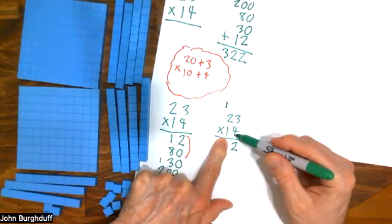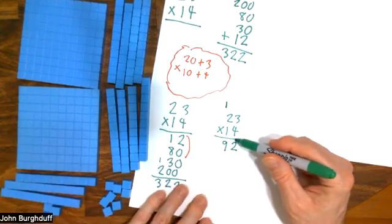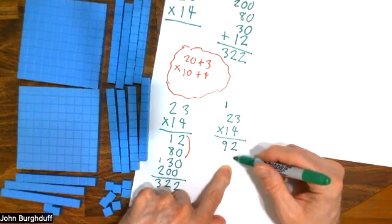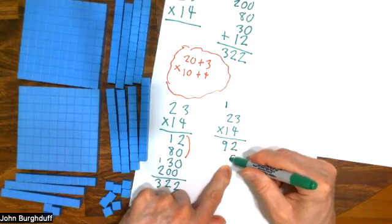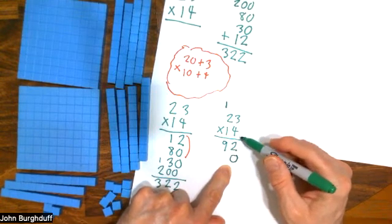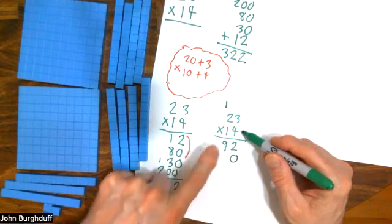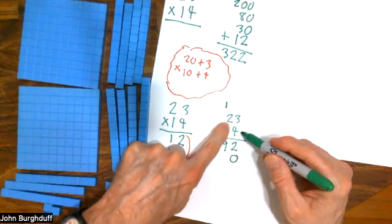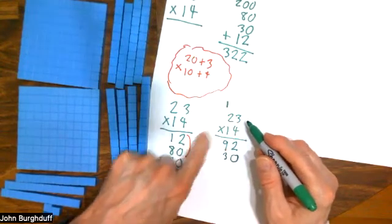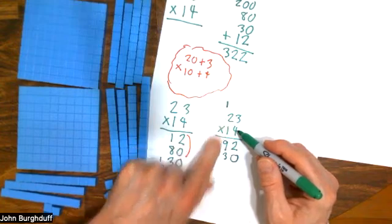Now, when we go to the next row, the standard algorithm, depending on how it's presented to you, people will either say leave the 1's place blank or put a 0 there. Either is okay, I'm going to put the 0, because it illustrates what's really happening. When I say 1 times 3, what that is doing is really multiplying 10 times 3. So the answer is 30 when I multiply the 1 times the 3. And then when I multiply the 1 by the 2, that's really 10 times 20, and that gives me 200.